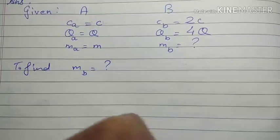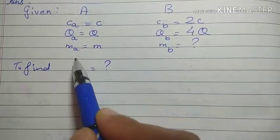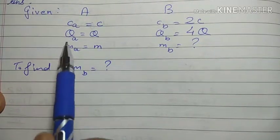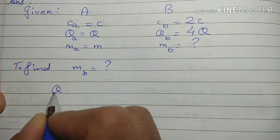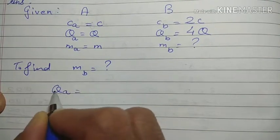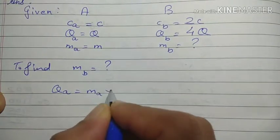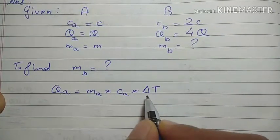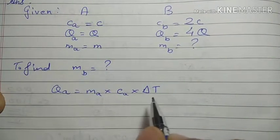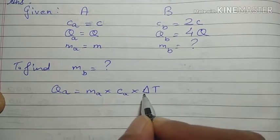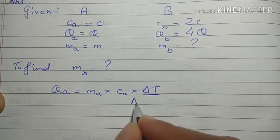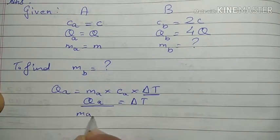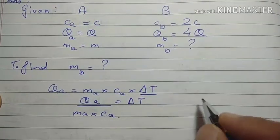We need m_B. Now, given all this, let's think about which formula to apply. Since heat is given, we can apply the formula of heat. The amount of heat received by substance A is equal to m into specific heat of A into ΔT. What is given is that the change in temperature is the same for both substances, so we'll get the equation in terms of ΔT, keeping ΔT on one side: ΔT equals q_A upon m_A times c_A.